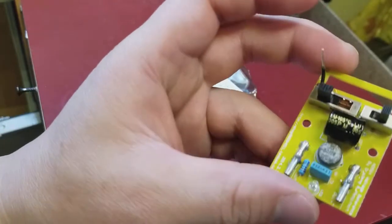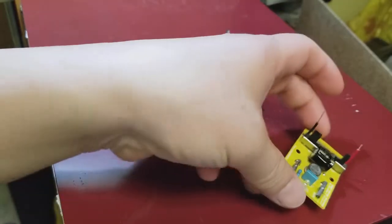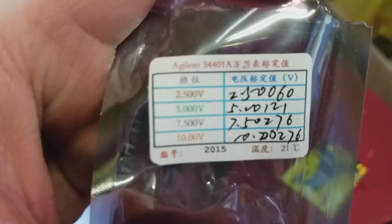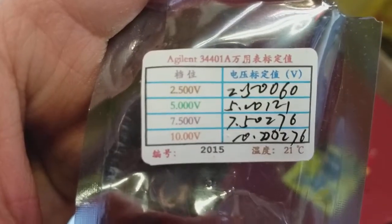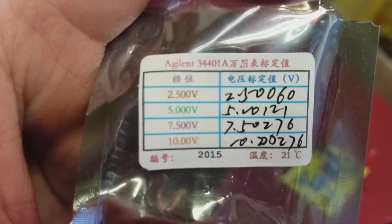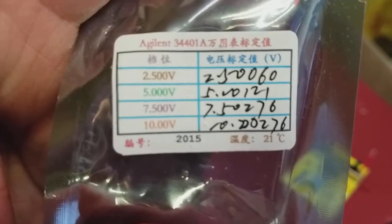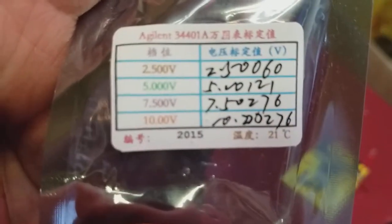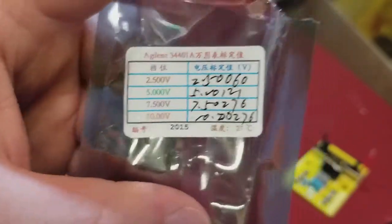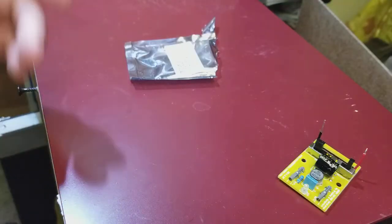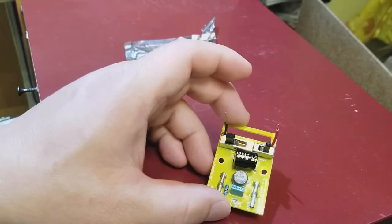Now the only thing that came with this voltage reference is this sticker here. I don't know how real this is. It says 2.50060 volts, 5.00121 volts, 7.50276 volts, and 10.00276 volts at 21 Celsius. I don't know if they just write the same thing for every one of these boards because there's complaints on the internet saying that some of these stickers are all exactly the same.